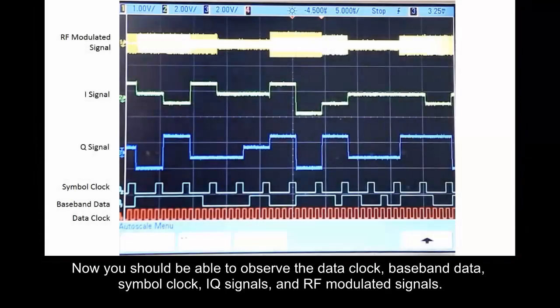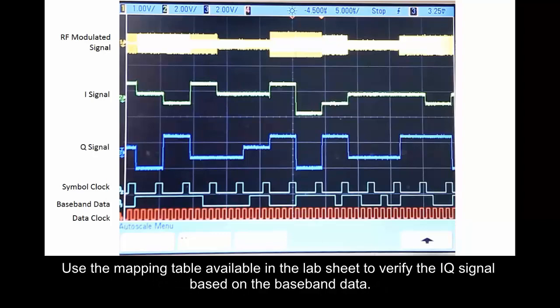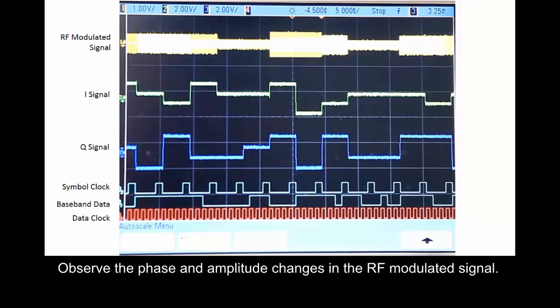Now you should be able to observe the data clock, baseband data, symbol clock, IQ signals, and RF modulated signals. Use the mapping table available in the lab sheet to verify the IQ signal based on the baseband data. Observe the phase and amplitude changes in the RF modulated signal.